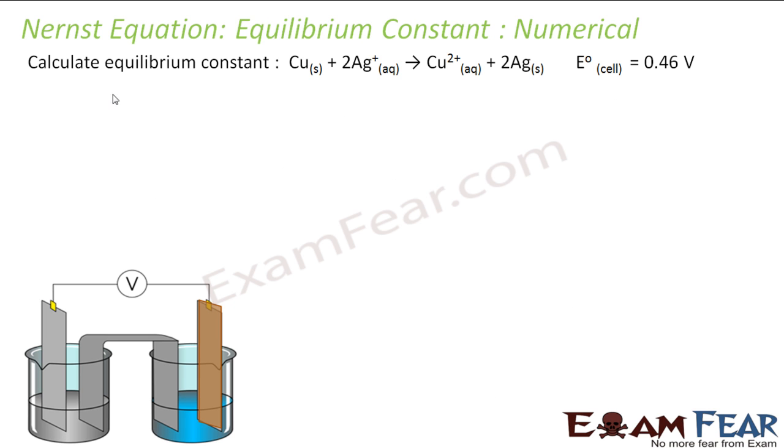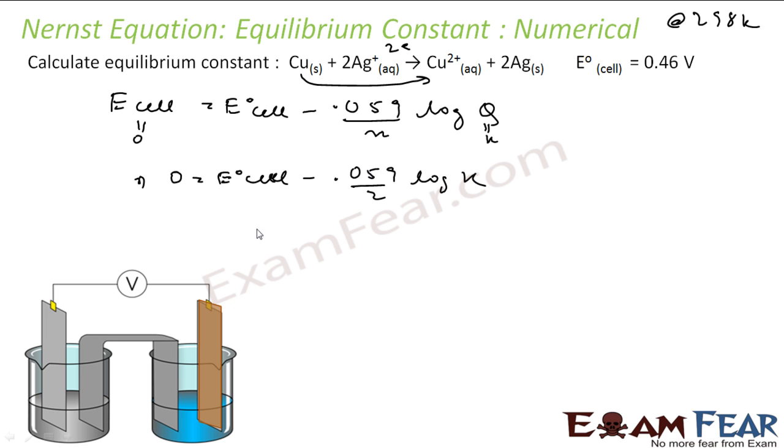We have to find the equilibrium constant for this reaction. We know that E cell is nothing but E° cell. Let us assume this is at 298 Kelvin, use the shortcut formula minus 0.059 by N log of Q. So at equilibrium this is 0, and Q is K. I can say 0 = E° cell minus... For this equation N is 2, copper becomes Cu2+ so it is 2 electrons, 0.059 by 2 log of K, and E cell value is given, that is 0.46 volt.